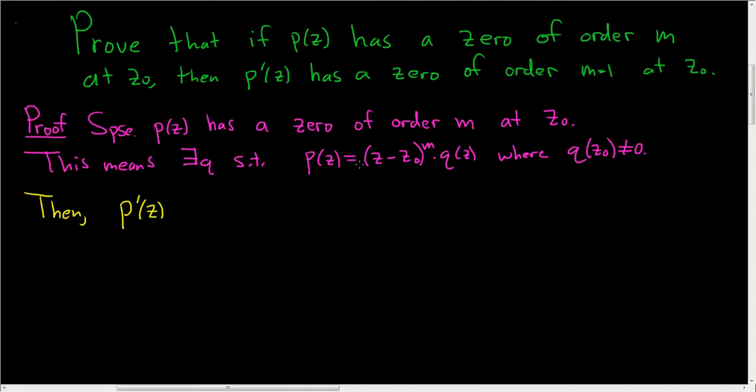And in order to take the derivative, we'll use the product rule. So we'll take the derivative of the first. So we'll use the power rule here. So m z minus z naught to the m minus 1 times the derivative of z minus z naught. But that's just 1 so I won't write it. So this is the derivative of the first times the second. So q of z.